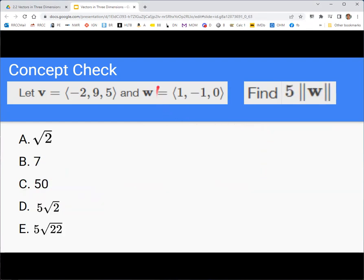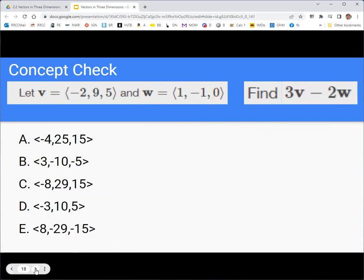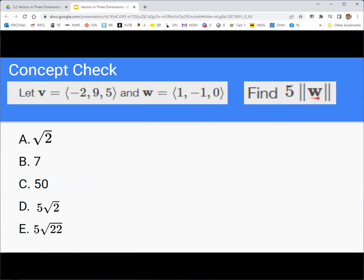Right now, given the same vector w, let's find 5 times the magnitude of w.